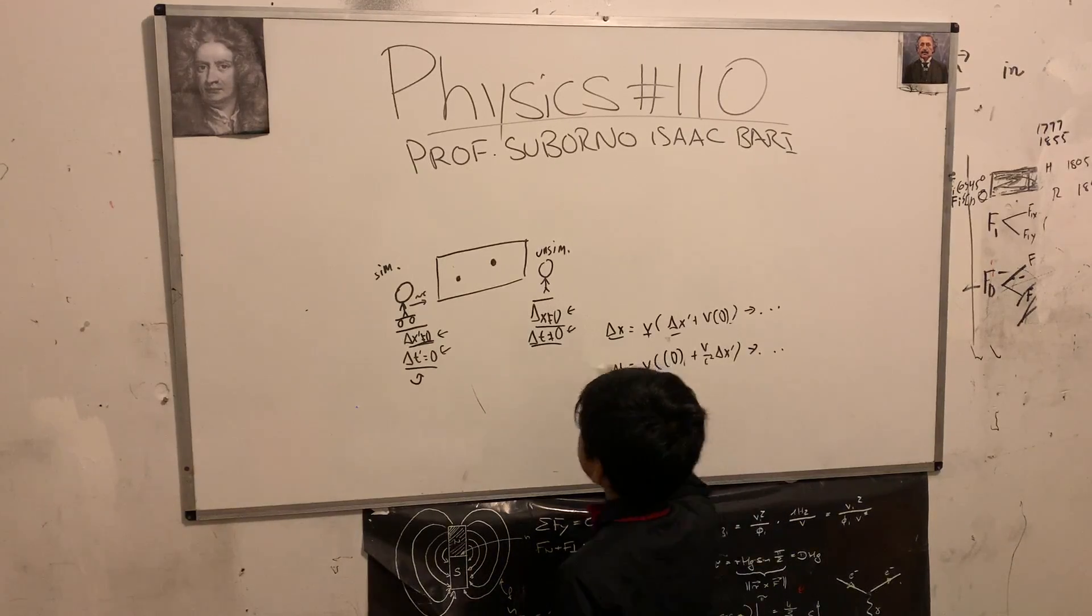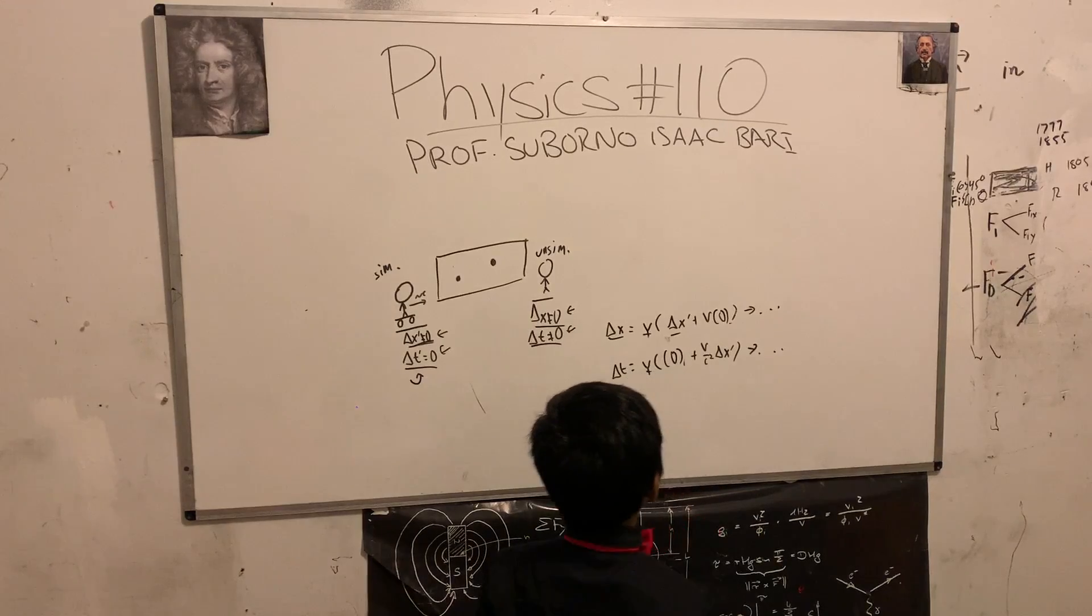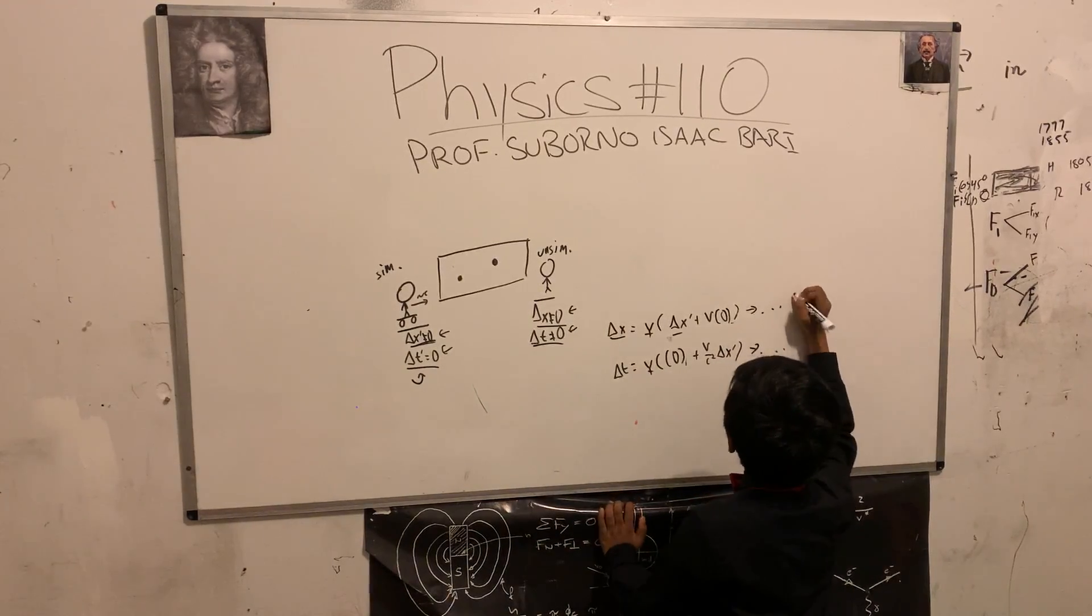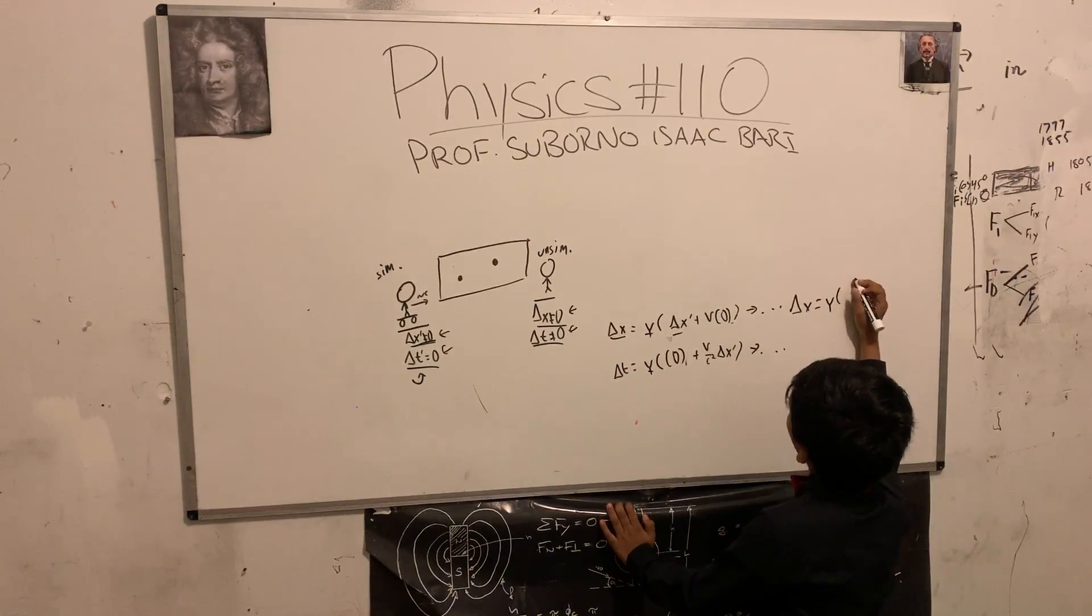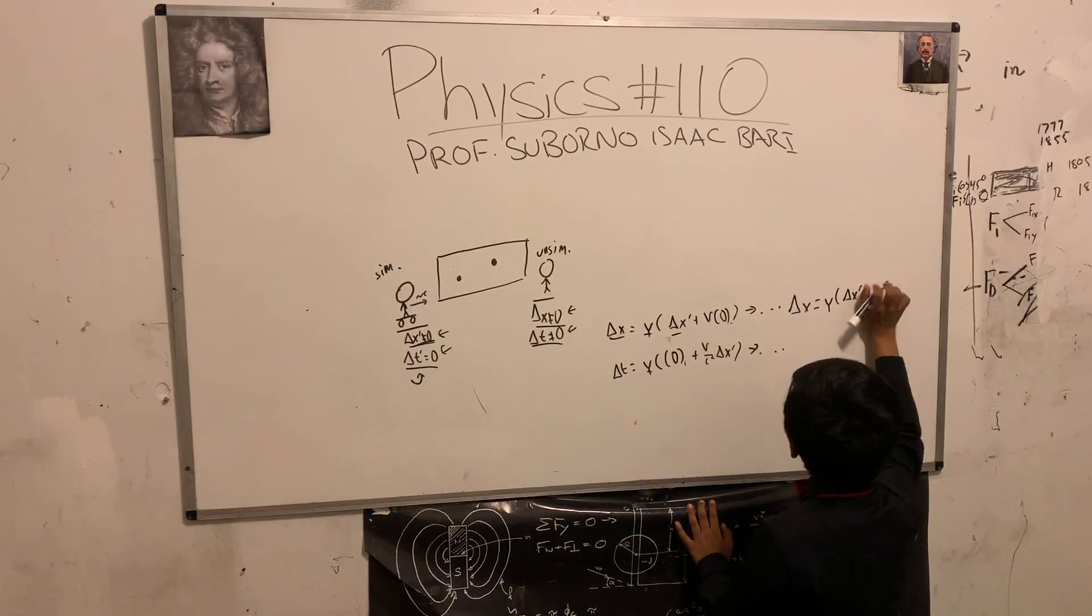So here we have gamma, then delta t prime is going to be equal to zero, and then we have v over c squared delta x prime which is not equal to zero.